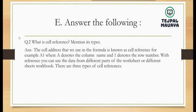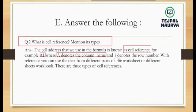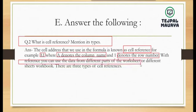Question 2: what is cell reference? Mention its types. The cell address that we use in a formula is known as cell reference. For example, A1, where A denotes the column name and 1 denotes the row number. With references you can use data from different parts of your worksheet and calculate as needed.